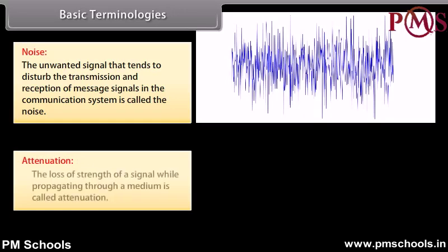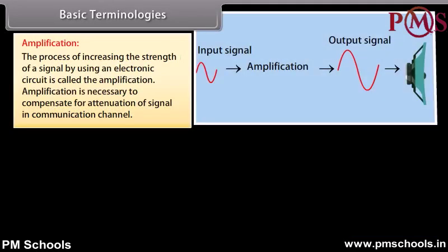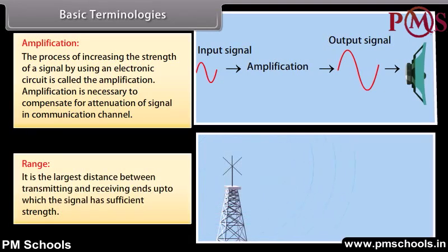Attenuation: The loss of strength of a signal while propagating through a medium is called attenuation. Amplification: The process of increasing the strength of a signal by using an electronic circuit is called amplification. Amplification is necessary to compensate for attenuation of the signal in the communication channel. Range: It is the largest distance between transmitting and receiving ends up to which the signal has sufficient strength.